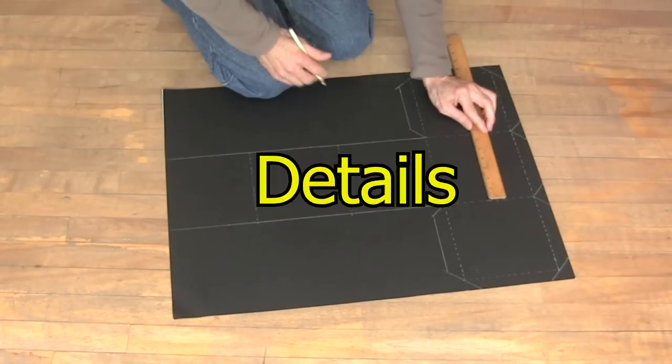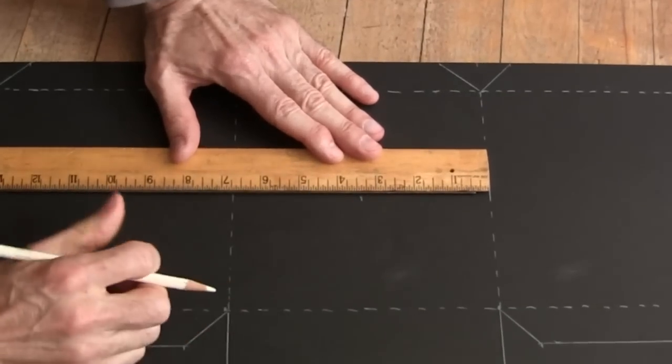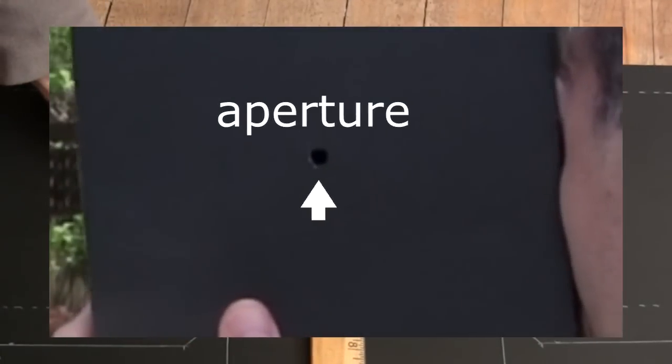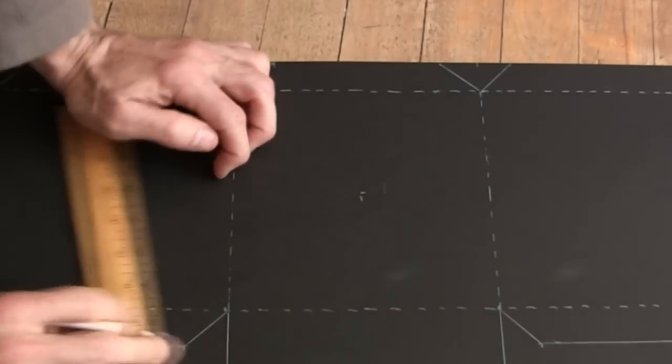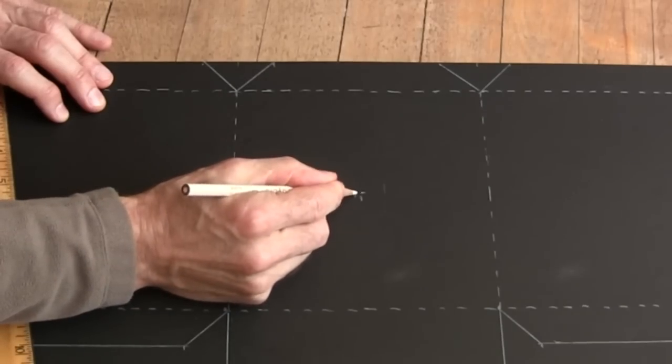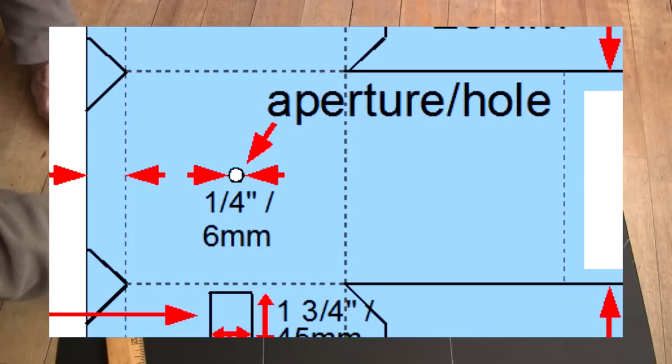There are three more details we can add to finish it off. Firstly draw a small circle in the middle of this square. That's the hole which the light will enter into, the camera's aperture. Don't worry if it's too big. You can cover it up with cardboard from the outside to make smaller holes later as I'll show you. I make it around a quarter inch or six millimeters in diameter.